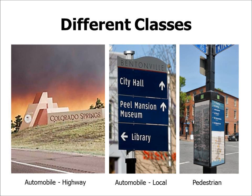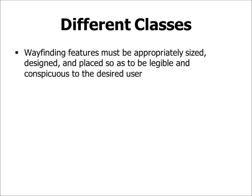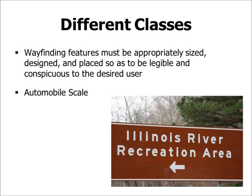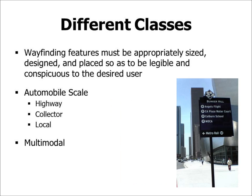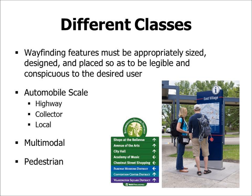Finally, here's an example of a pedestrian kiosk wayfinding marker creatively placed around a street sign pole. Wayfinding features must be appropriately sized, designed, and placed to be legible and conspicuous to the desired user. Automobile scale includes wayfinding markers for highway, collector, and local routes — obviously different sizes, fonts, and designs based on placement. Next is a multimodal marker appropriate for both automobiles at slower speeds and pedestrians and bicyclists. Finally, pedestrian markers are too small to be read by cars and can be creatively placed on street poles.